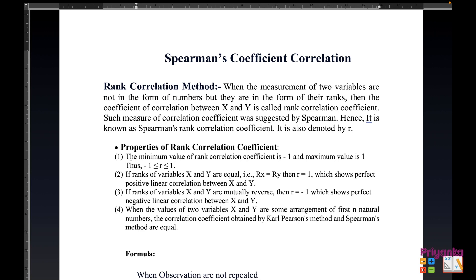Here are some important notes for understanding rank correlation. When the measurement of two variables are not in the form of numbers but in the form of their rank, the coefficient of correlation between x and y is called the rank correlation coefficient. This measure was suggested by Spearman, hence it is known as Spearman rank correlation coefficient, and it is also denoted by r.